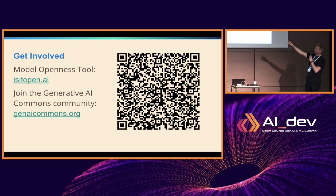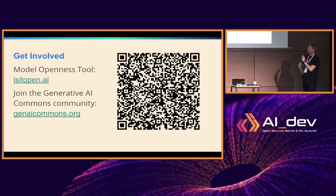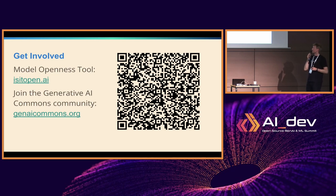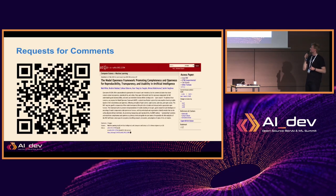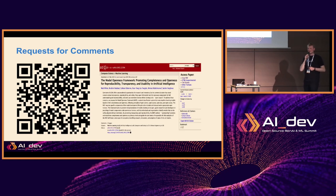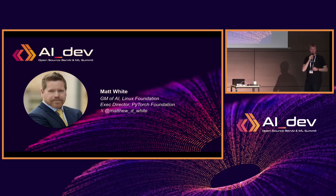You can check out the Model Openness Tool at isitopen.ai. If you scan this QR code you can find out how to participate in the Generative AI Commons community and contribute to the development of the framework and tool. Read the paper if you haven't, and share comments about how it can be improved. On that note, I'll invite Matt to come up to give a demo.